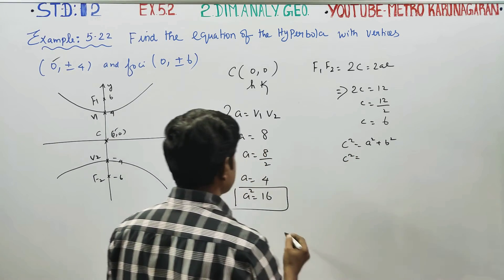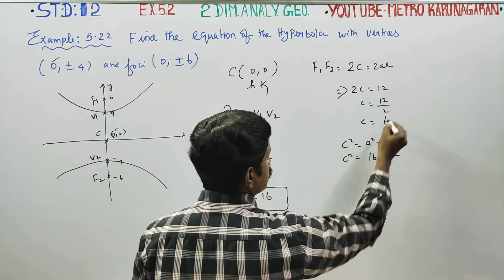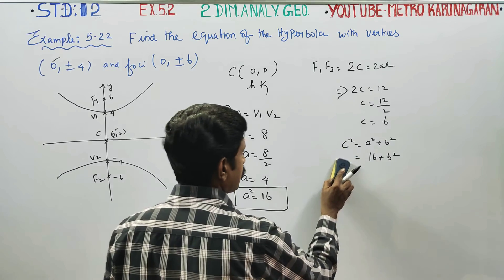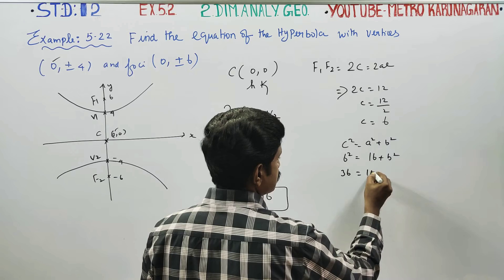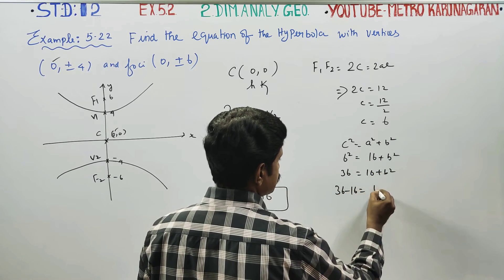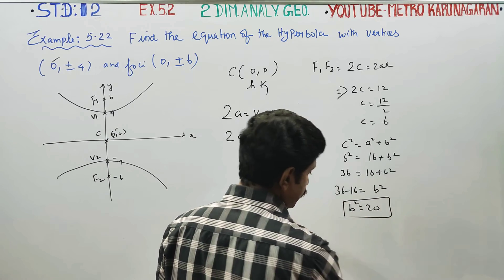Now, C square is equal to A square plus B square. My C square is equal to 6 square. 36 is equal to 16 plus B square. 36 minus 16 is equal to B square. B square is equal to 20.